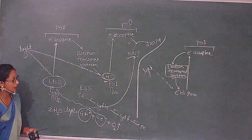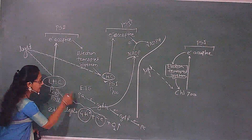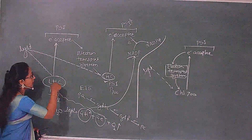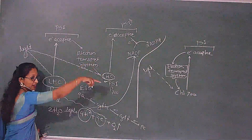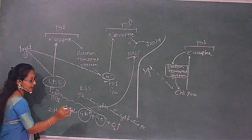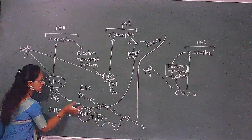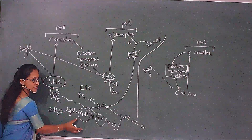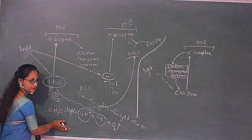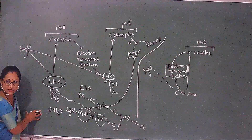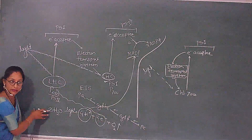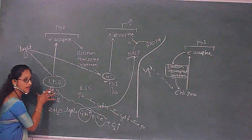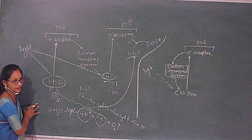The electrons coming from this chain will also be accepted by NADP. And where will these electrons enter next? Into this system. These electrons are entering, but these are not the emitted electrons from PS2 — where are these entering from? By the photolysis of water. The electrons emitted from photolysis are accepted by PS2.